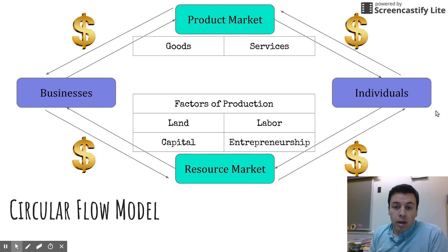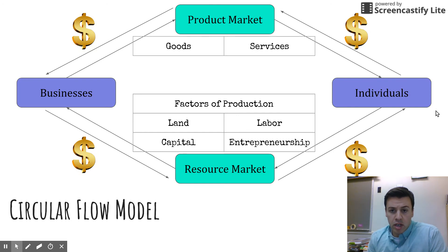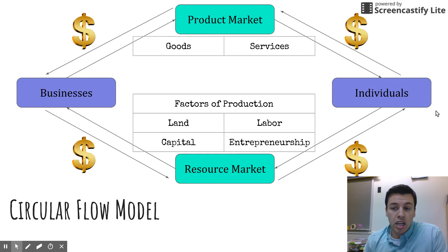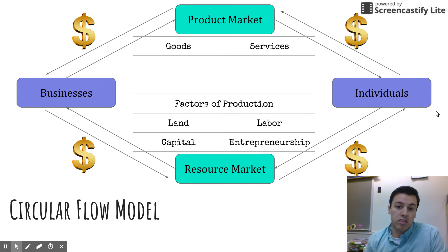One note before wrapping up: you might see this model in a slightly different format — the product market or resource market might be flipped, or individuals and businesses might be on opposite sides. Even if it doesn't look exactly the same, recognize it's still the same model. The money always flows from businesses to individuals in the resource market, and from individuals to businesses in the product market. Goods and services always go from businesses to individuals in the product market. That wraps it up for the circular flow model.